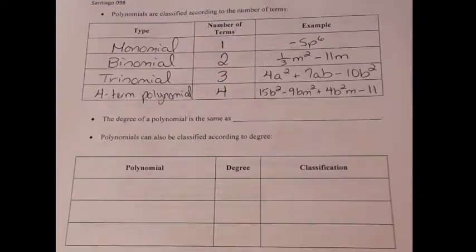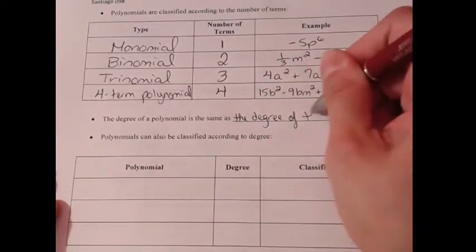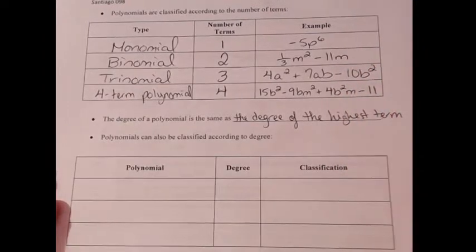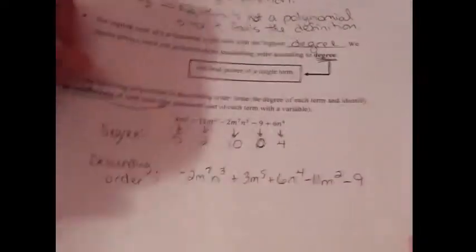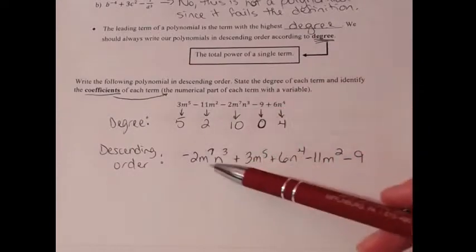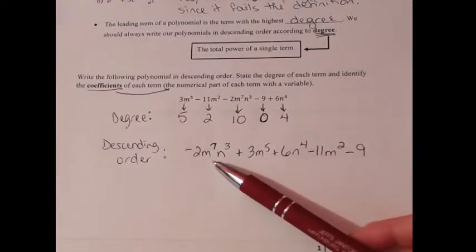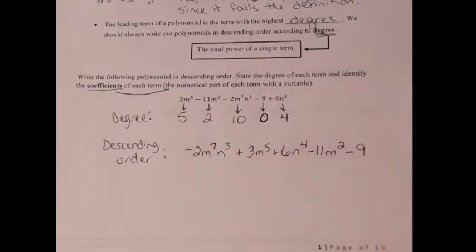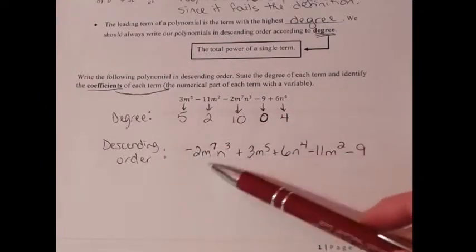The degree of an entire polynomial is the same as the degree of its highest term. Looking back at the previous problem, the term with the highest degree was negative 2m to the seventh n to the third, which has degree ten. So even though the other terms have degrees five, four, two, and zero, the degree of the entire polynomial is ten — the highest term.